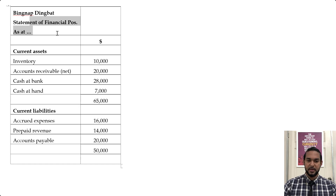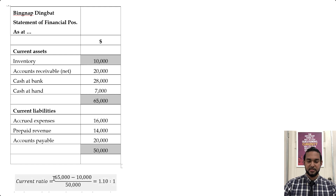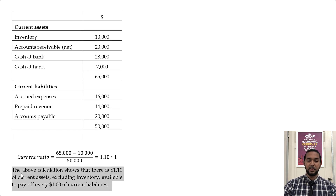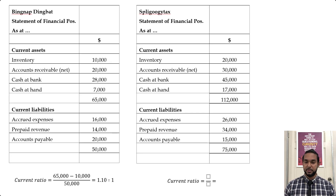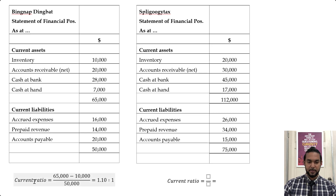Let's look at the calculation for Bignap Dingbat. We take current assets and subtract inventory, then divide by current liabilities: 65 minus 10 is 55, and 55 divided by 50 is 1.1 to 1. That means there is a dollar and 10 cents of current assets excluding inventory available to pay off every dollar of current liabilities.